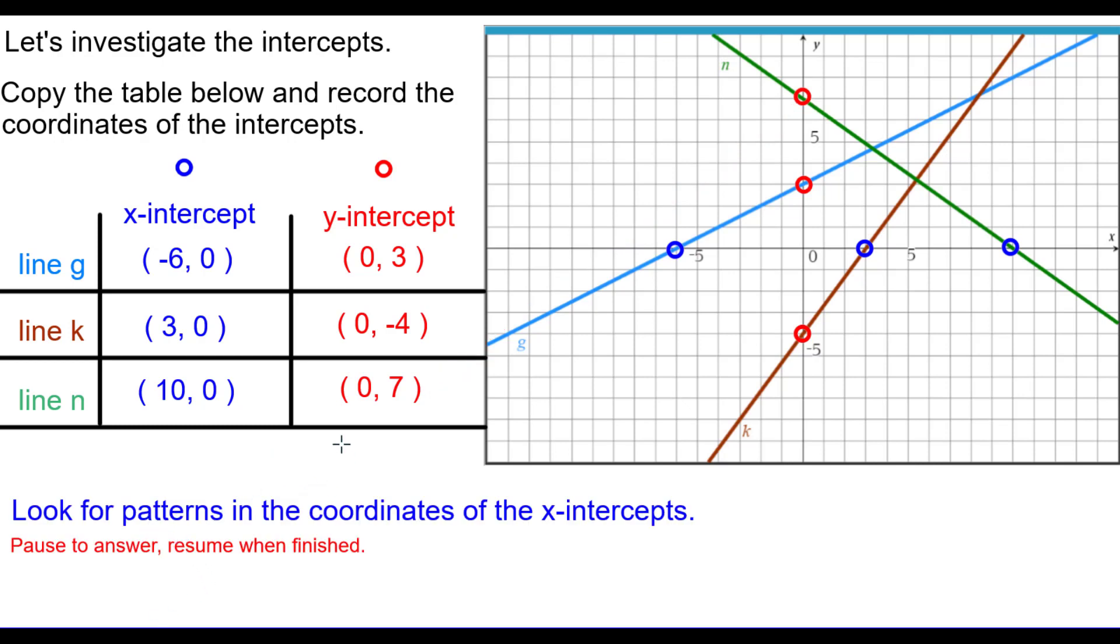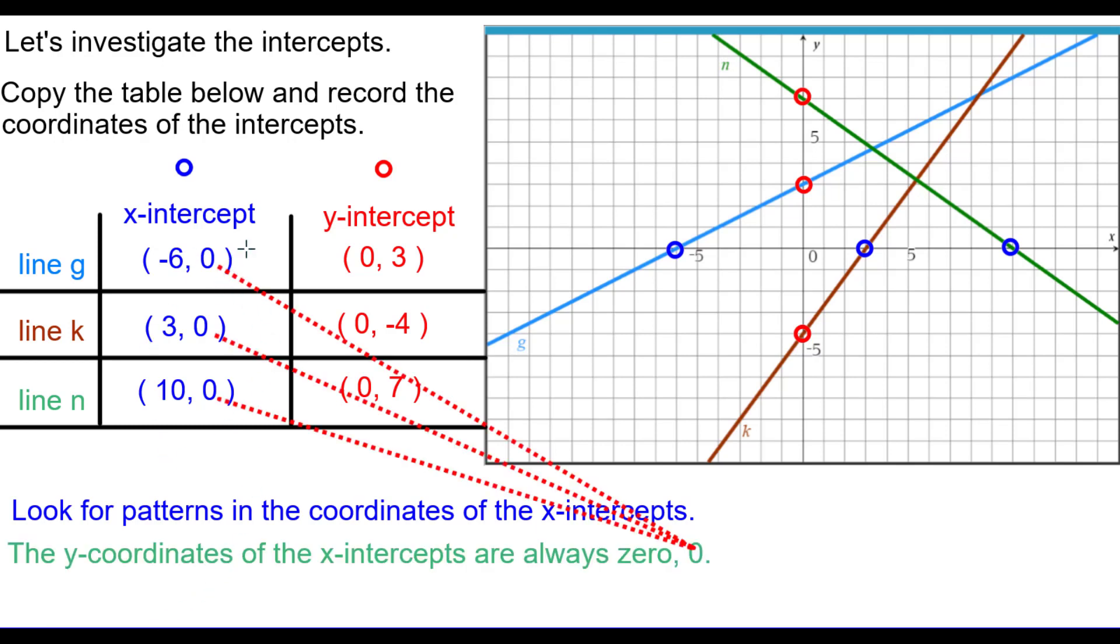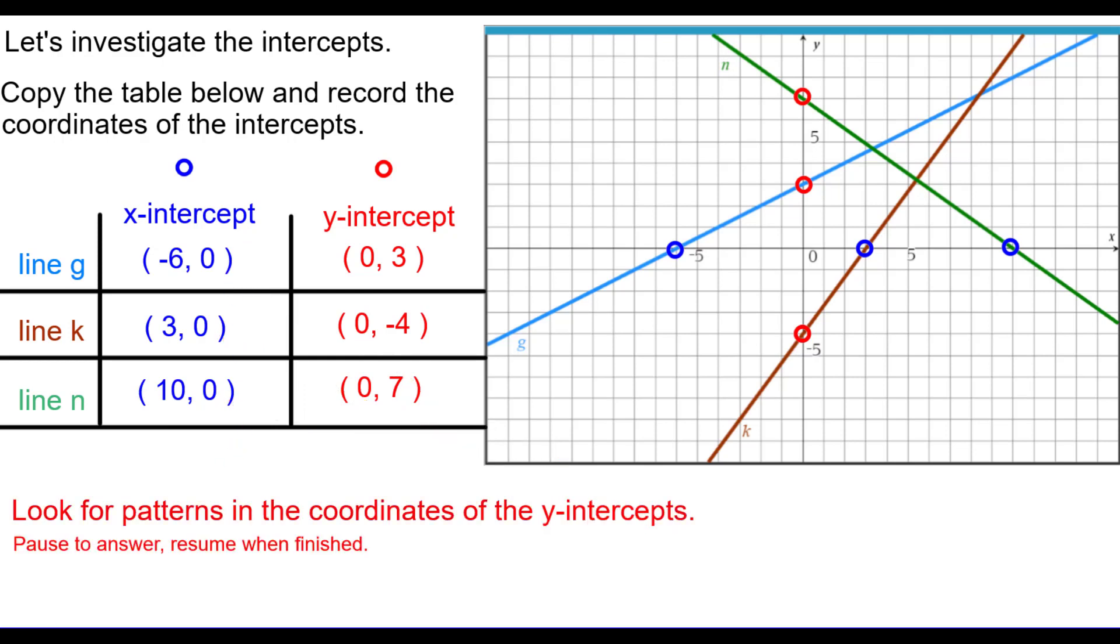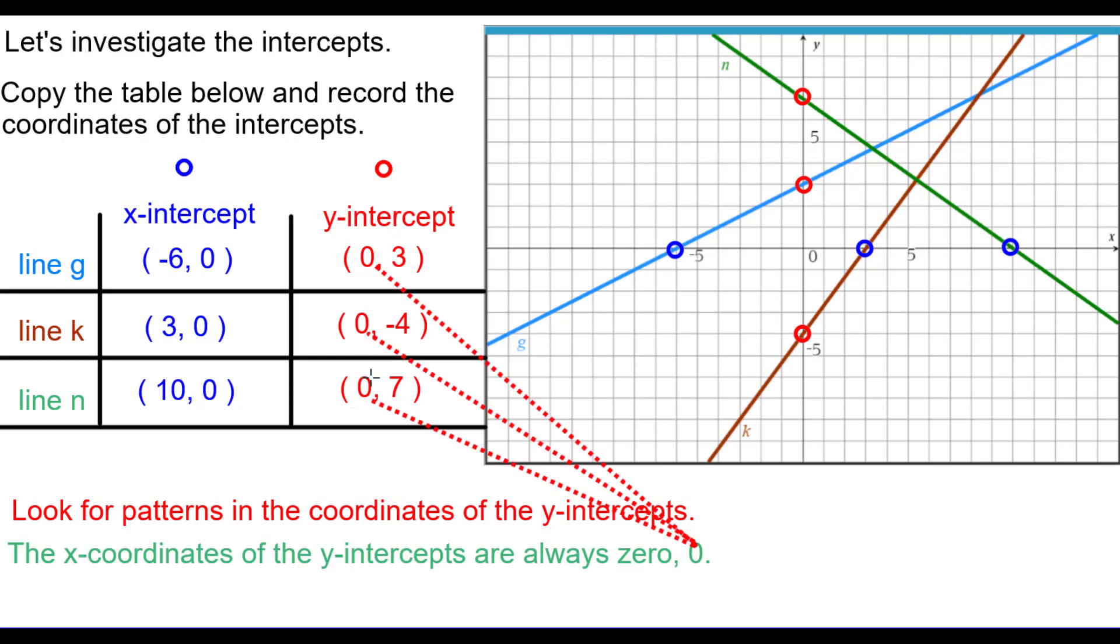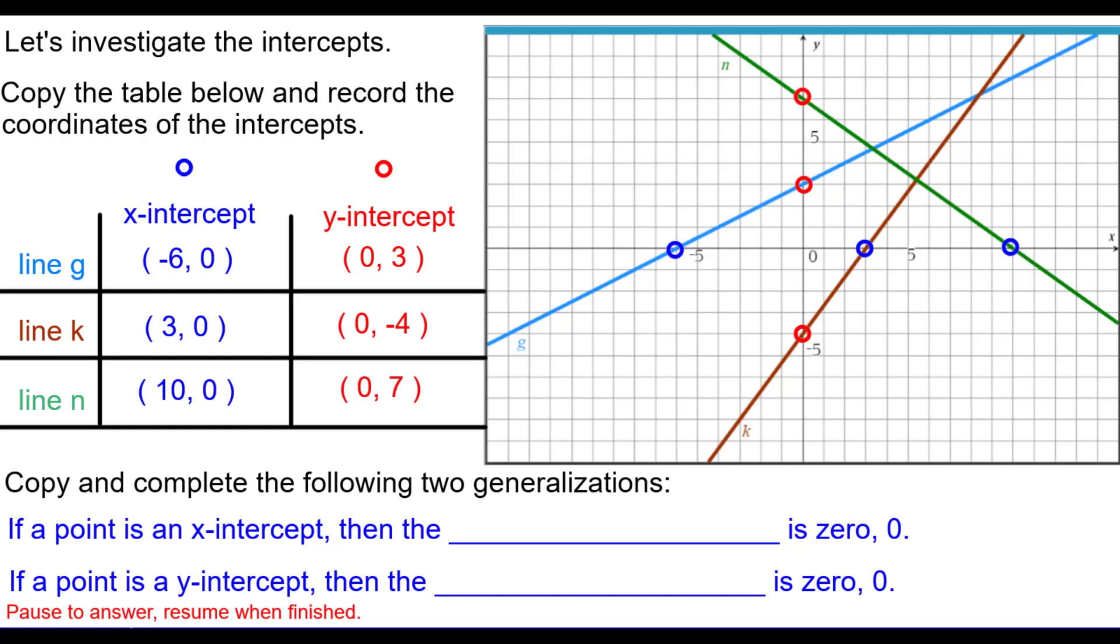We'd like you to stop and look for patterns in the coordinates of the X intercepts and patterns for the coordinates of the Y intercepts. First, the X intercepts. Pause to answer and resume when finished. So the Y coordinates for each of the X intercepts are always 0. So look for patterns in the Y intercepts. Pause to answer and resume when finished. And the X coordinates are 0 for each of the Y intercepts. So we'd like you to copy and complete the following two generalizations. Pause to answer and resume when you're finished. So if a point is an X intercept, then the Y coordinate is 0. If a point is a Y intercept, then the X coordinate is 0. And you'll see that if it's an X intercept, Y equals 0. If it's a Y intercept, X equals 0. Kind of just backwards.